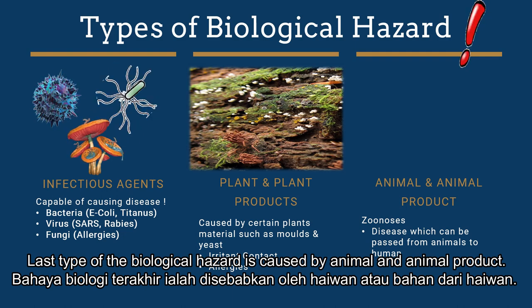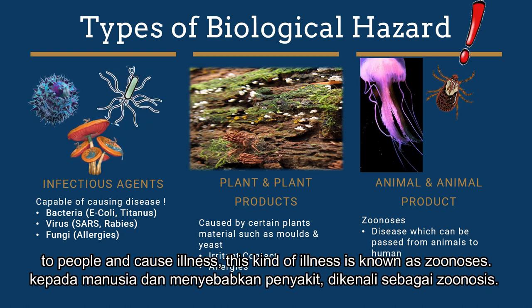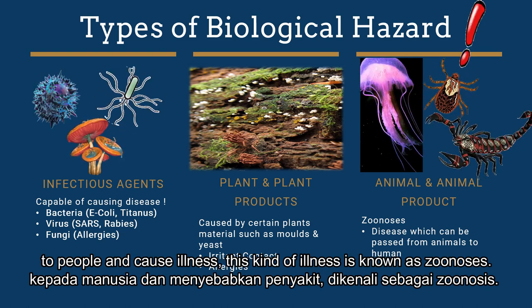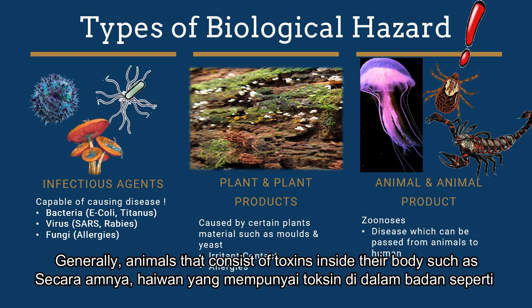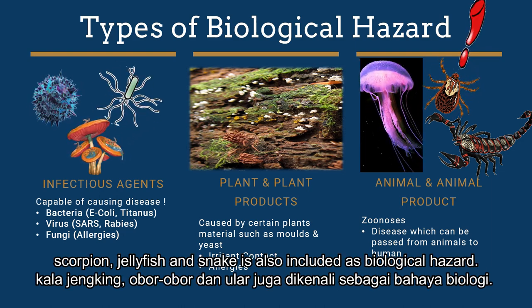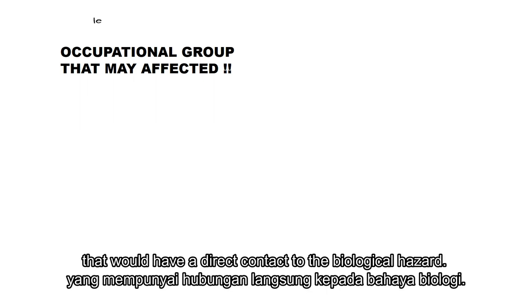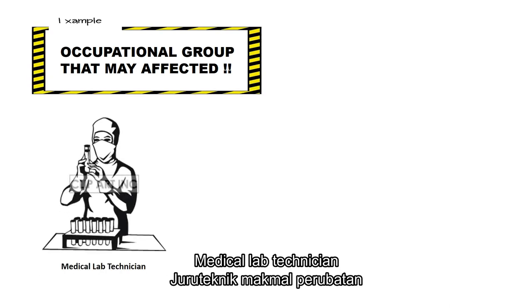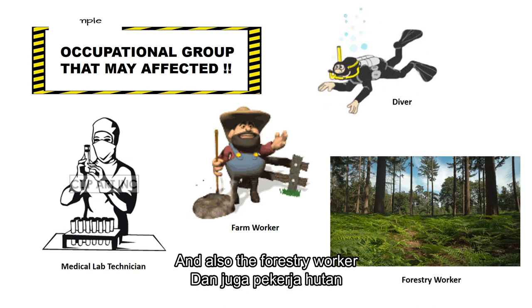The last type of biological hazard is caused by animals and animal products. Animals may sometimes carry harmful germs that can spread to people and cause illness. This kind of illness is known as zoonosis. Generally, animals that contain toxins inside their body such as scorpion, jellyfish and snake are also included as biological hazards. Examples of occupational groups that have direct contact with biological hazards include medical lab technicians, farm workers, divers and forestry workers.